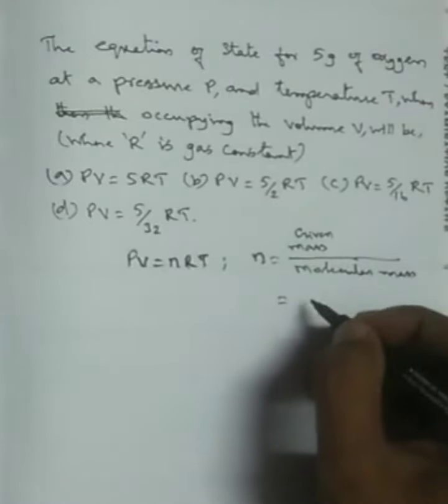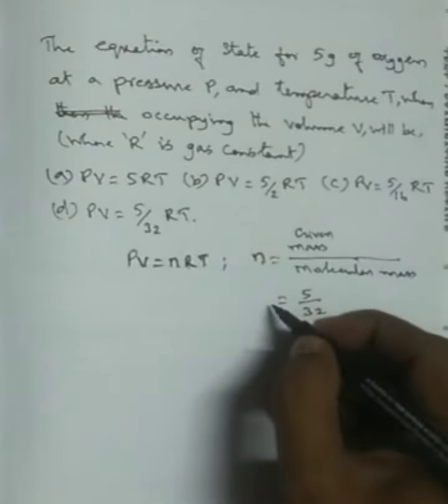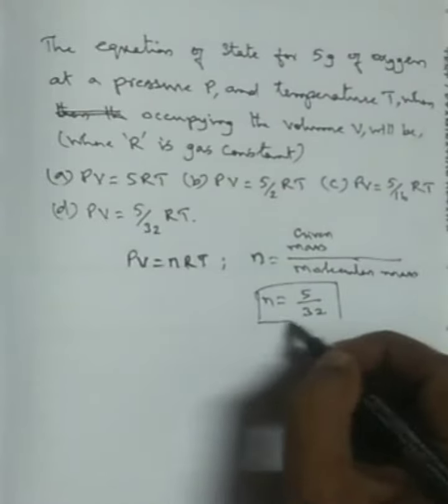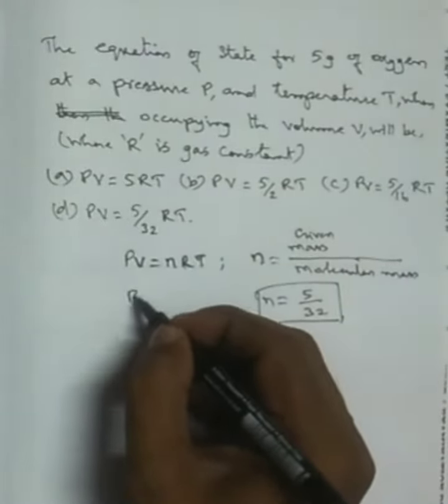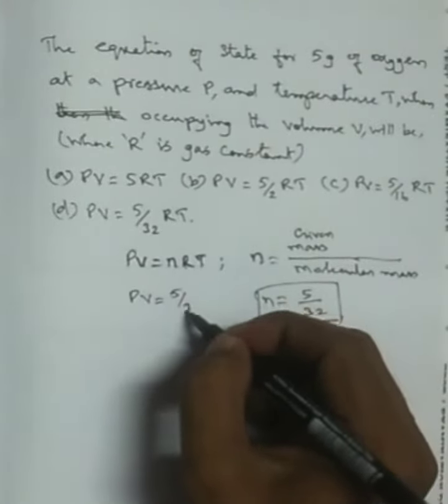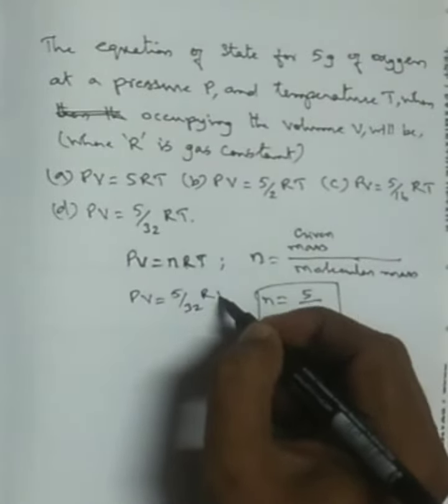Given mass is 5 grams and molar mass is 32 grams. So let's look at the answer. So PV equal to 5 by 32 RT.